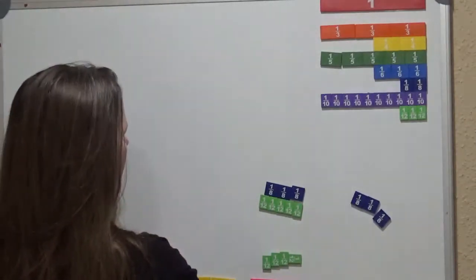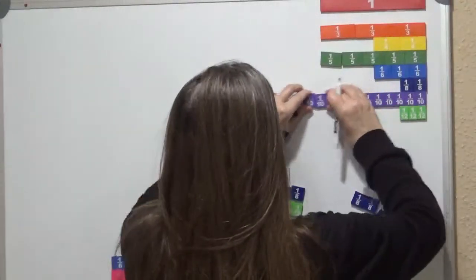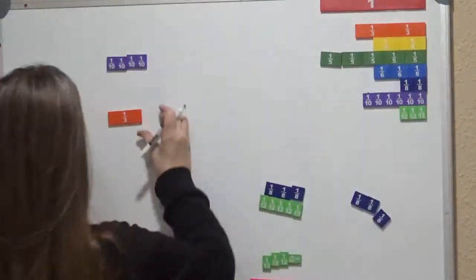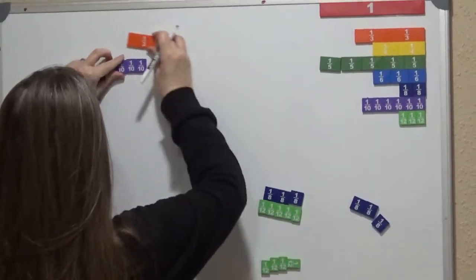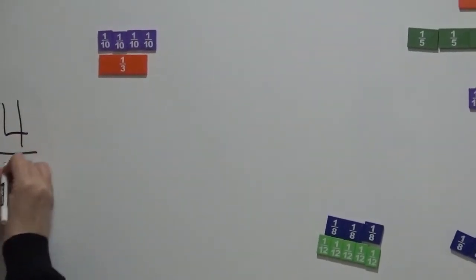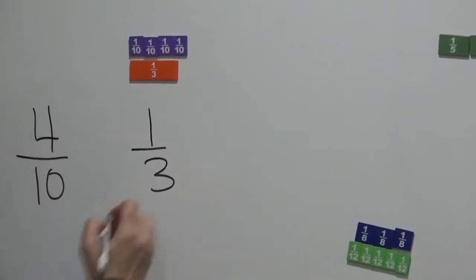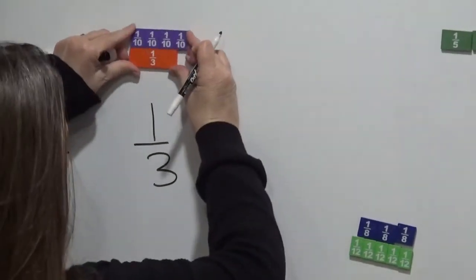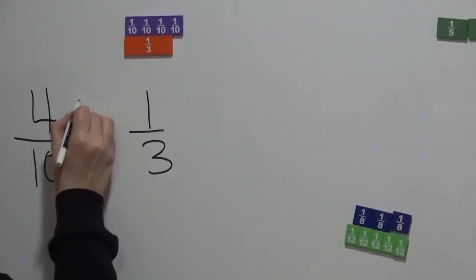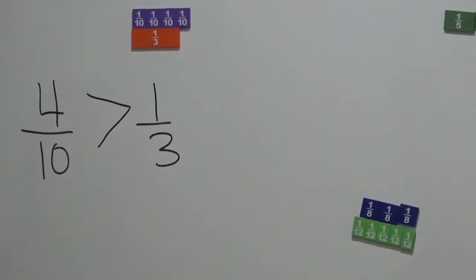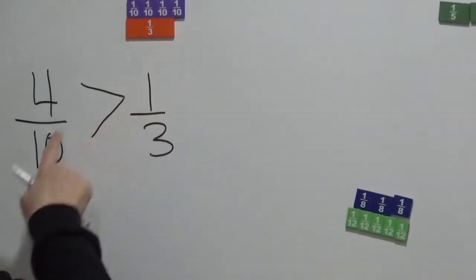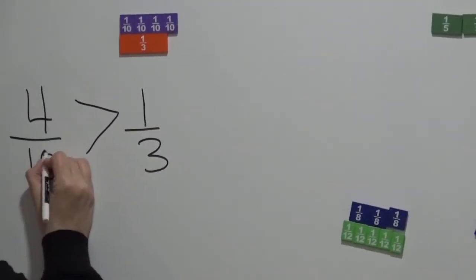Okay, now let's try another one. Let's try 4 tenths and 1 third. 4 tenths and 1 third. So, 4 tenths and 1 third. And as you can see, 4 tenths is greater than 1 third. So, 4 tenths is greater than 1 third. When you're looking at that, you can see that 4 tenths is more than 1 third. The fraction is more.